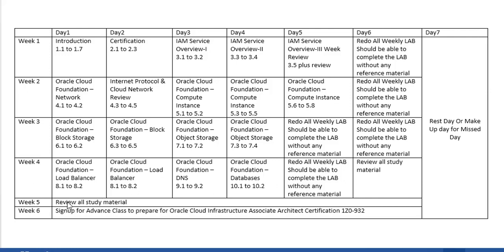In the final fifth week, you're going to review everything you've done in the past four weeks. Hopefully you'll be very confident to sign up for the advanced class, which is basically going to get you certified as an Associate Architect in the 1Z0-932 Associate Architect certification exam.